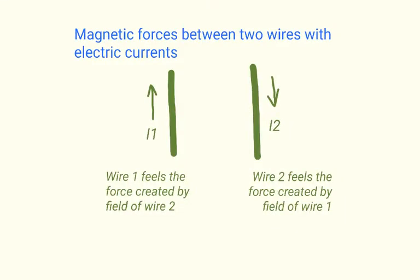Now that we know how to calculate the magnetic force exerted on a moving charge or a wire with a current, we will learn how to find the magnetic field created by charges in the current. For example, suppose we wish to find magnetic forces between two wires carrying electric currents I1 and I2. Wire with current 1 will experience a magnetic force created by the magnetic field of wire 2, and wire with current 2 will experience a magnetic force created by the field of wire 1.